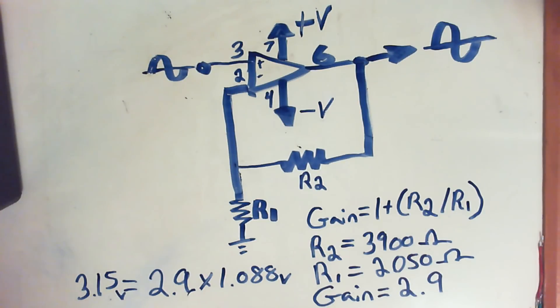Whatever I apply on the input is going to be 2.9 times as big on the output. The input voltage that I'm inputting into my circuit is 1.08 volts, and with the gain of 2.9 I should have 3.15 volts on the output.